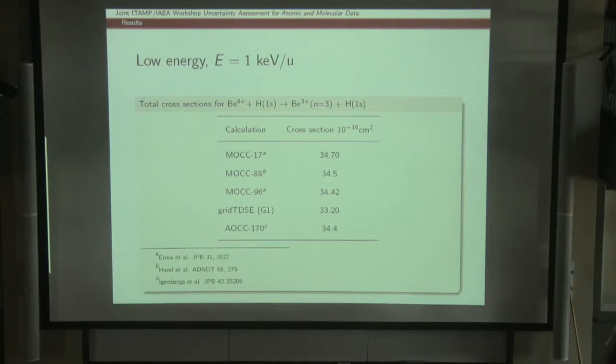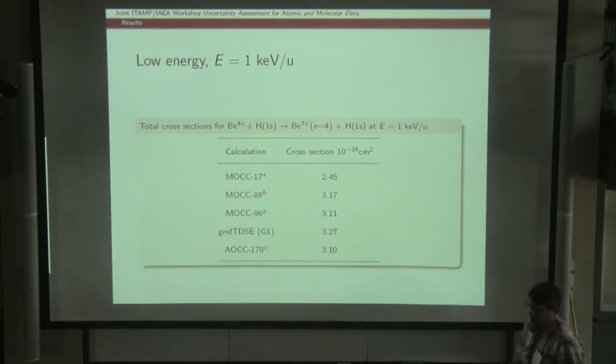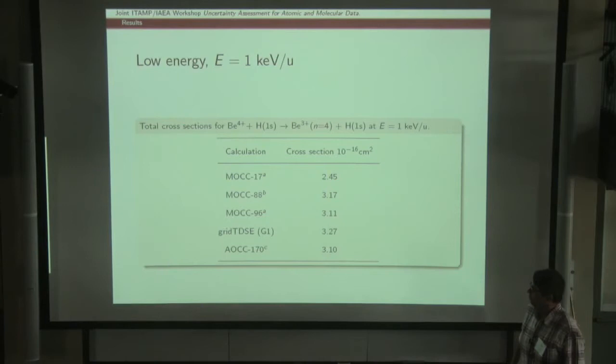At this low energy, the only levels that are populated are n=3 and n=4. For n=4, the difference between the small and large basis sets is obviously higher. I would say that the value 2.4 is not a reliable reference because this is essentially the minimal basis set. In order to estimate the accuracy of this calculation, I would need another calculation between the 70- and the 96-state calculations. Again, the agreement with the other calculations is rather good.